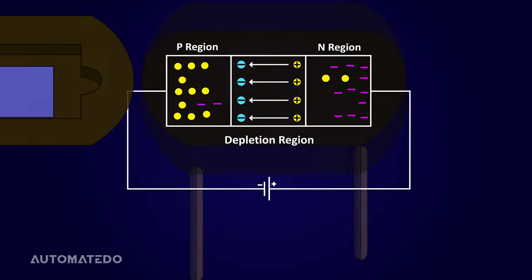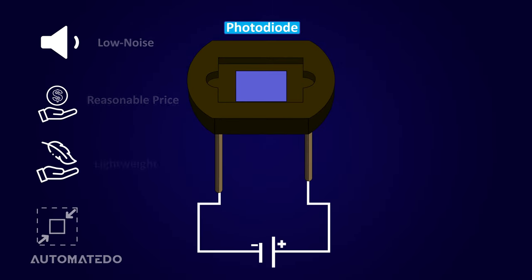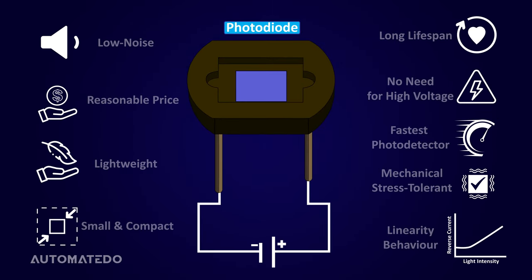Just like every other equipment, the photodiode has pros and cons. The main advantages of using photodiode are low noise, reasonable price, lightweight, small and compact, long lifespan, no need for high voltage, fastest photodetector, mechanical stress tolerance, and the output current has linearity as a function of incident light.